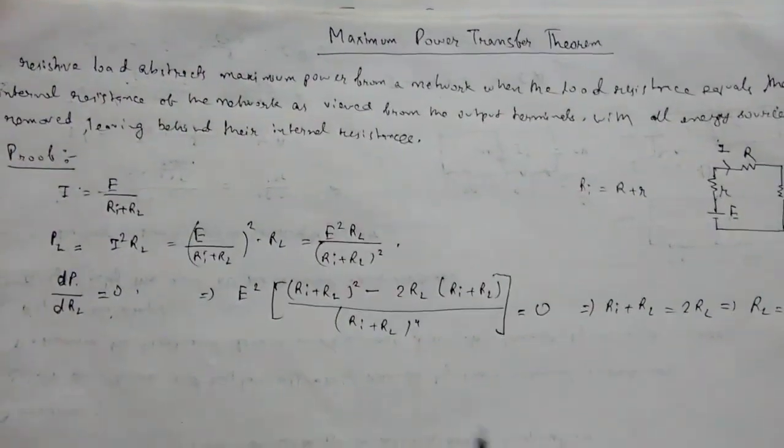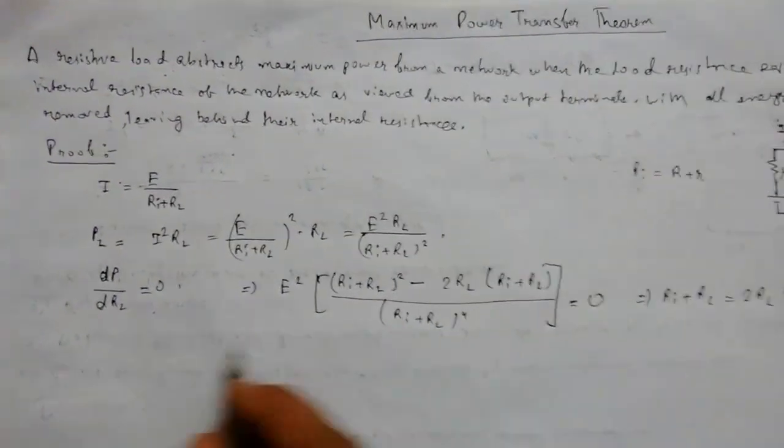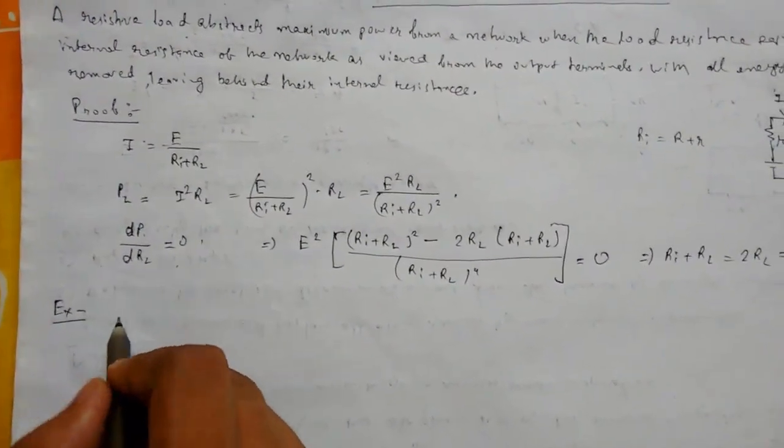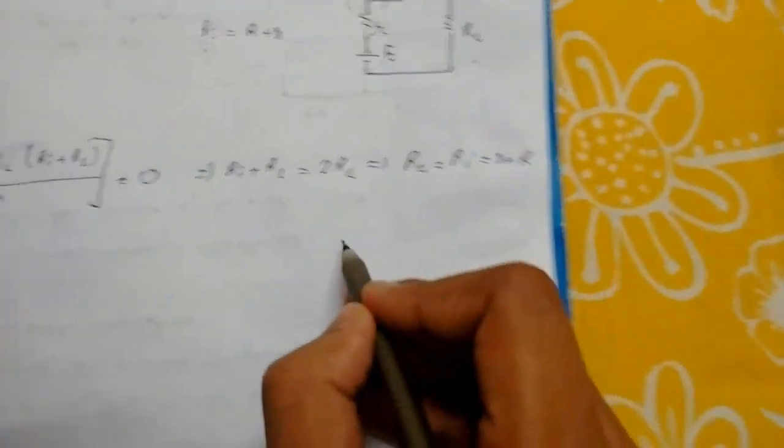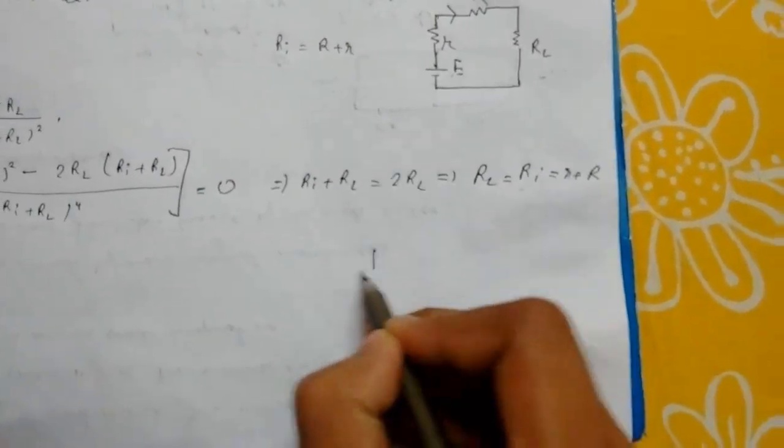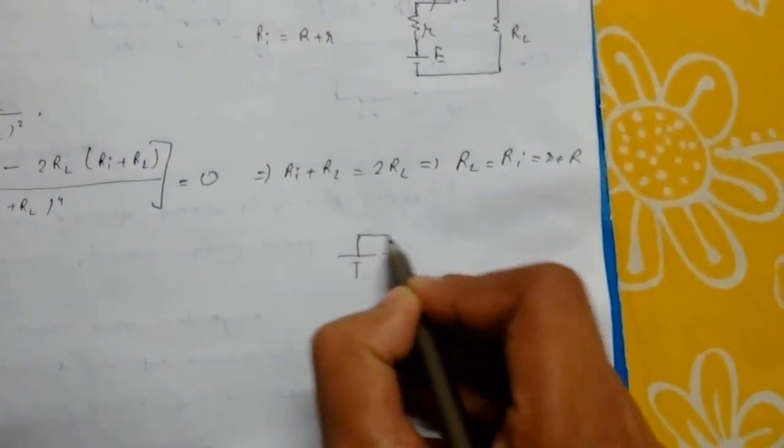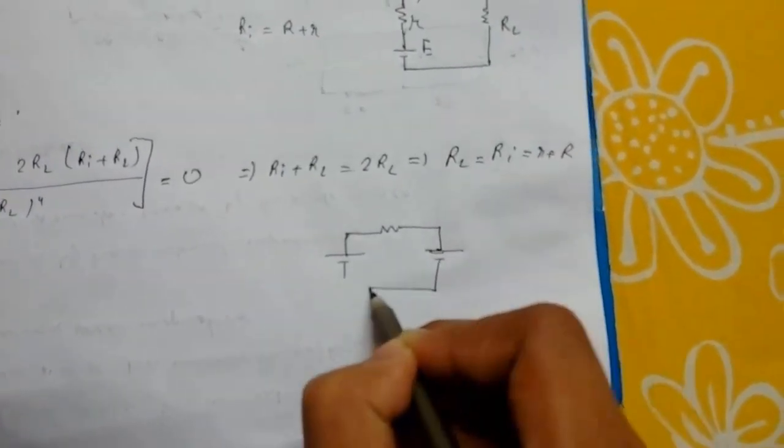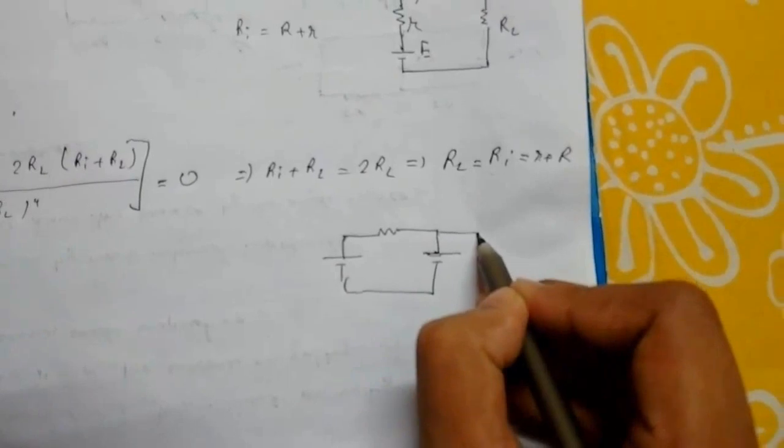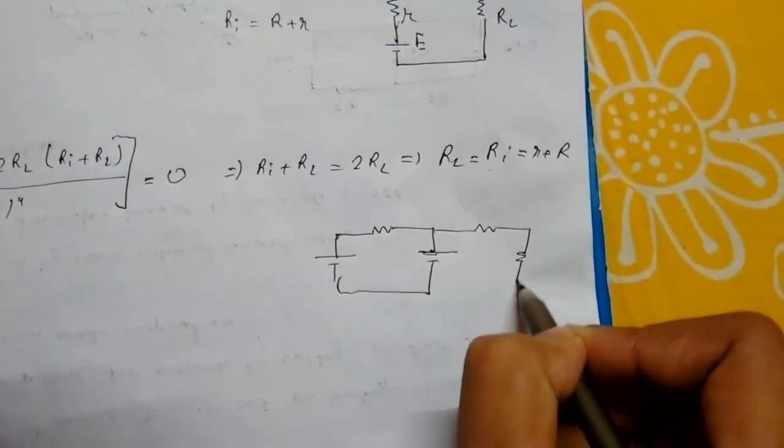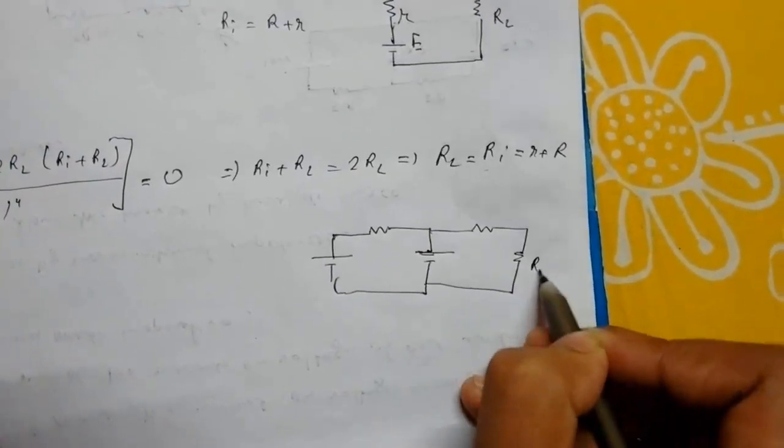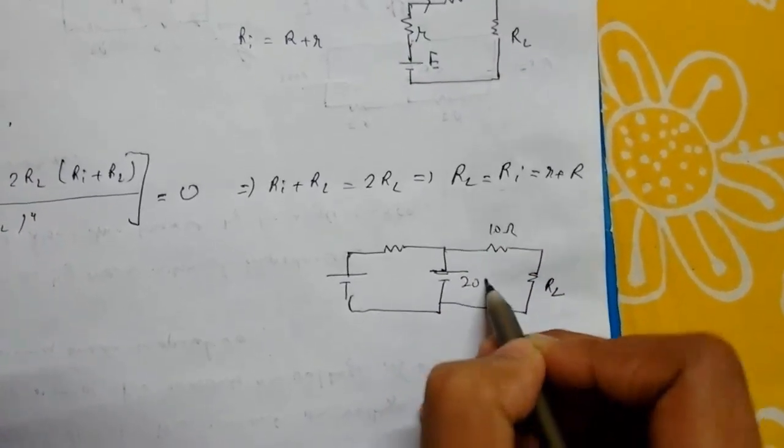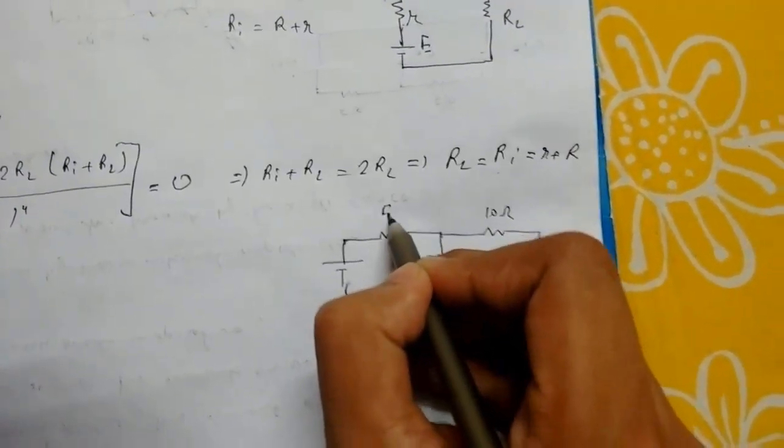and the theorem is proved. Now let's see an example of how this theorem works. Suppose we have a circuit like this: a 20 volt source, a 10 ohm resistance, a 10 volt source, a 5 ohm resistance, and load resistance RL.